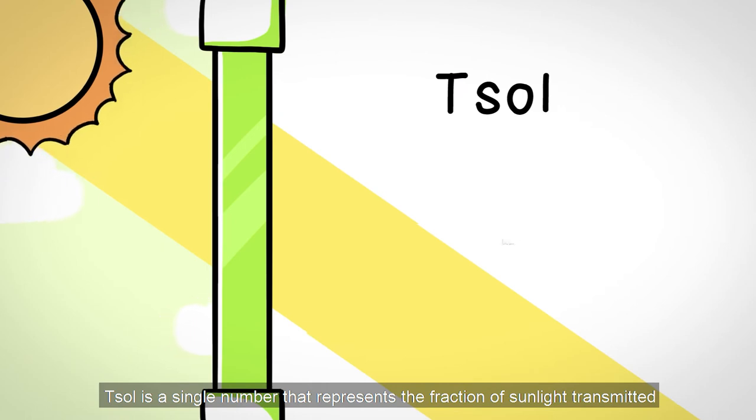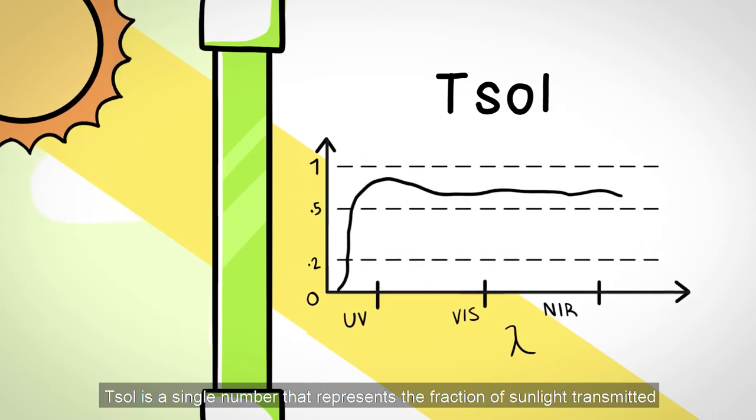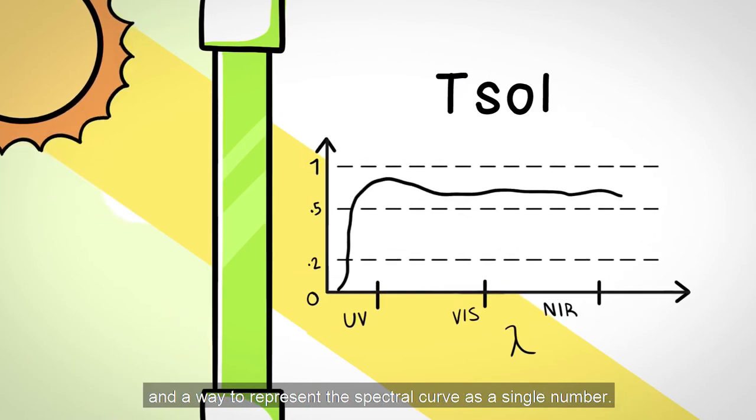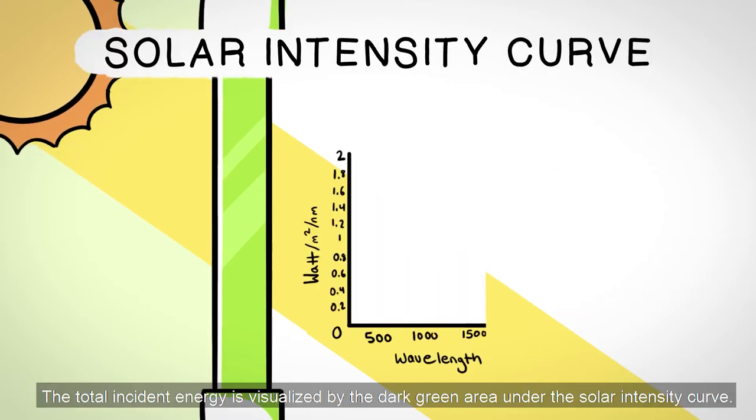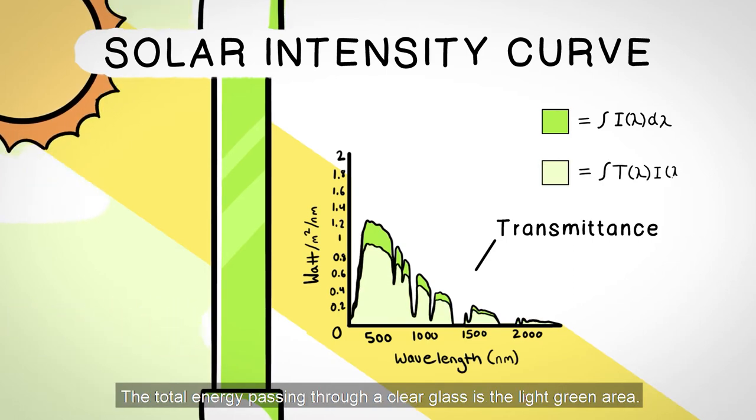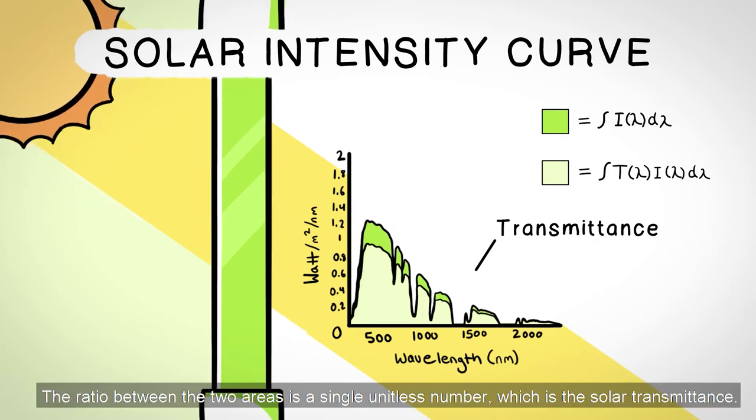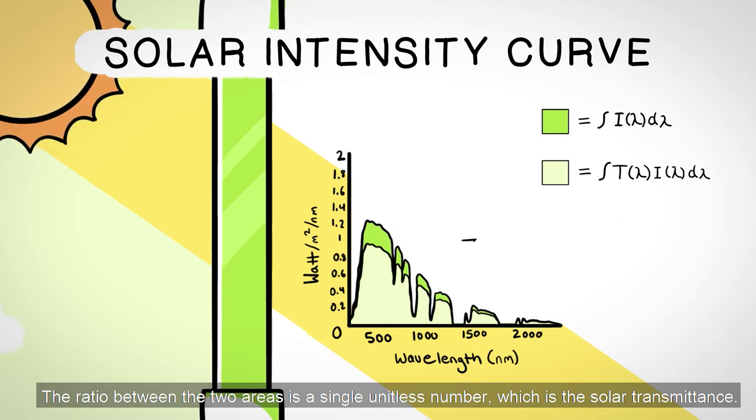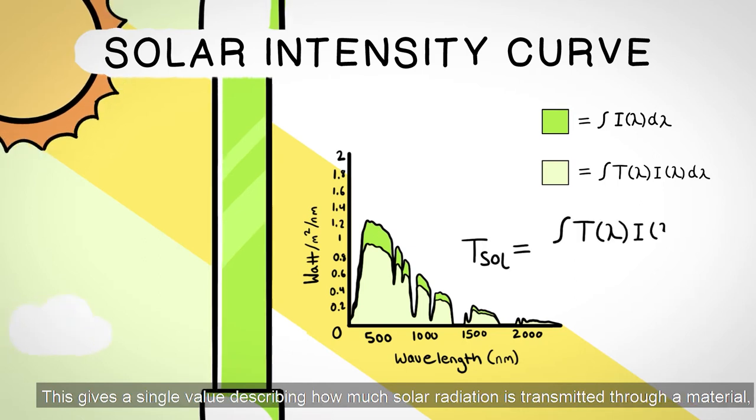Tsol is a single number that represents the fraction of sunlight transmitted, and a way to represent the spectral curve as a single number. The total incident energy is visualized by the dark green area under the solar intensity curve. The total energy passing through a clear glass is the light green area. The ratio between the two areas is a single unitless number, which is the solar transmittance. This gives a single value describing how much solar radiation is transmitted through a material.